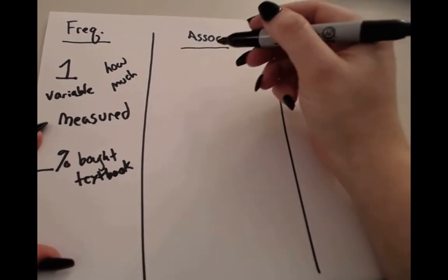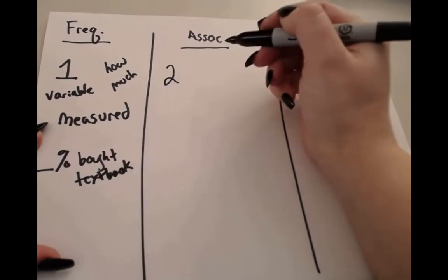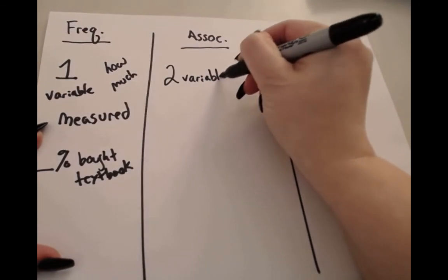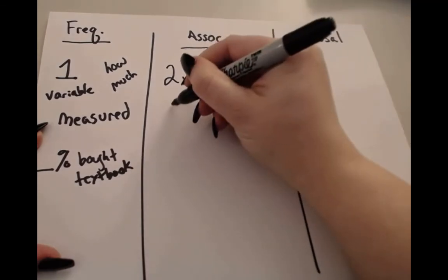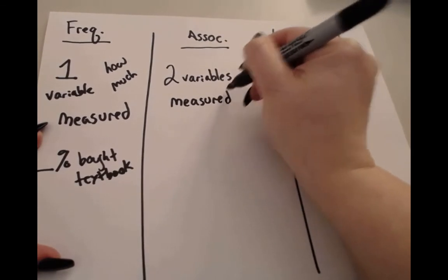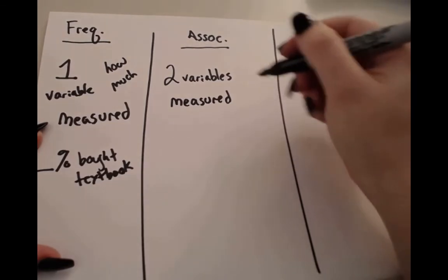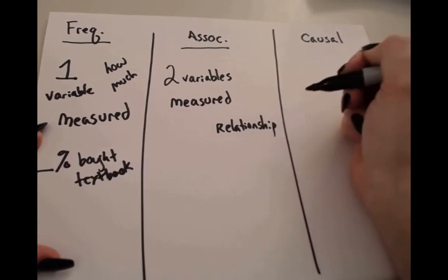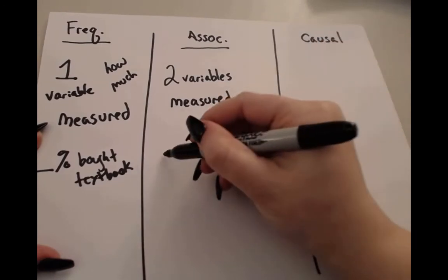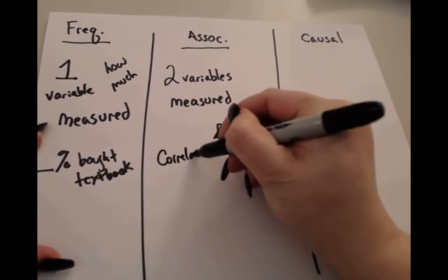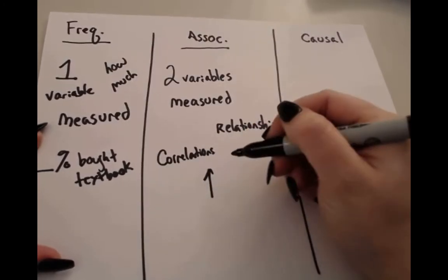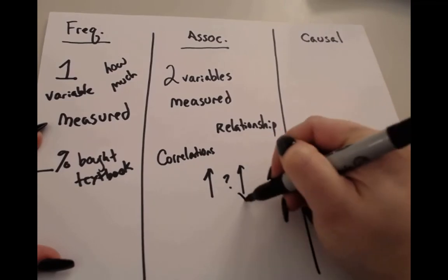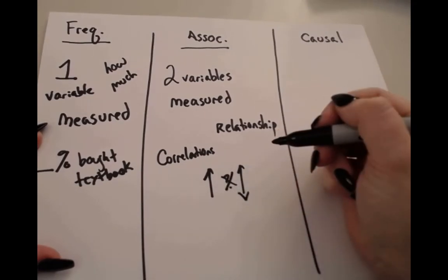Association claims, you can think of this as a relationship, because there are two variables here, but each of the variables are also only measured. Because they are only measured, we're looking to see is there a relationship between them. So a lot of times with this, we're using correlations, where we're looking to see if one variable goes up, what happens to the other one? Does it also go up, or does it go down, or is there no relationship here at all?